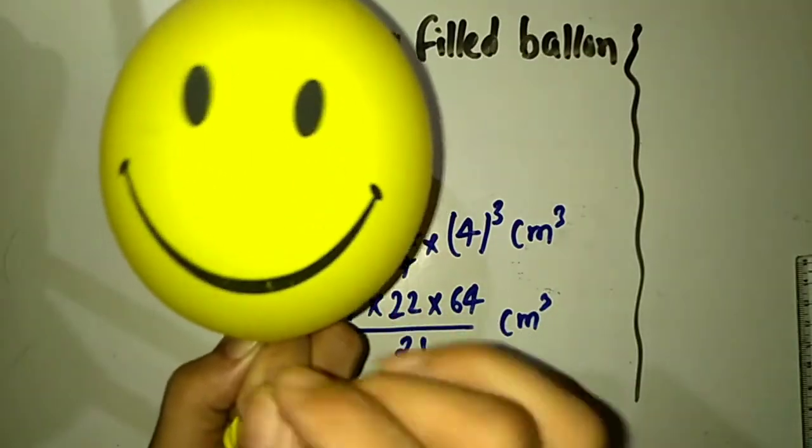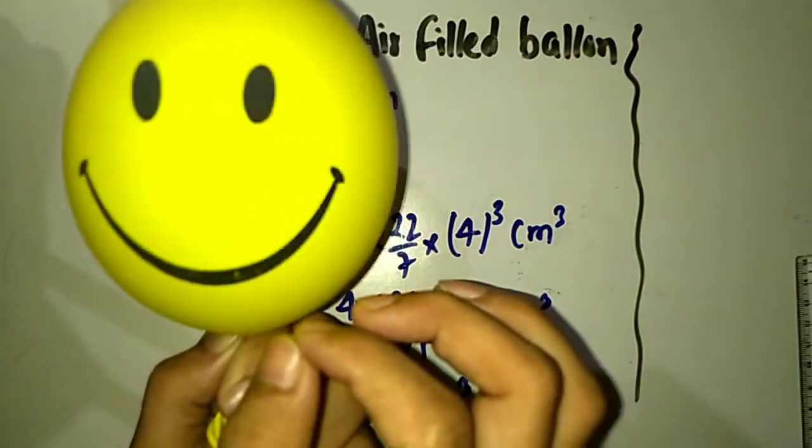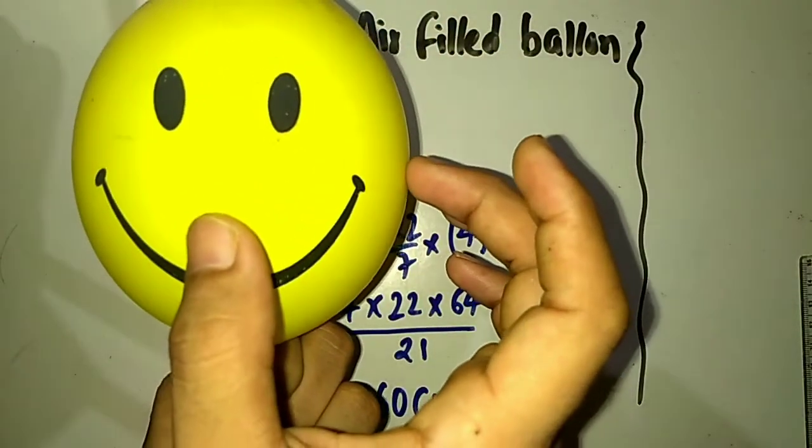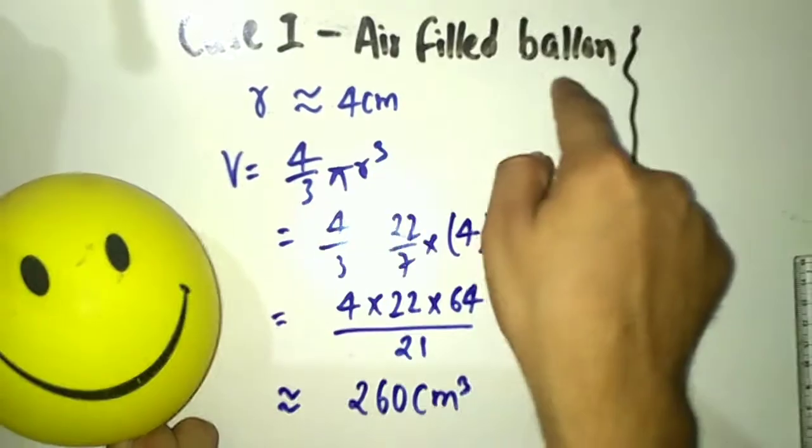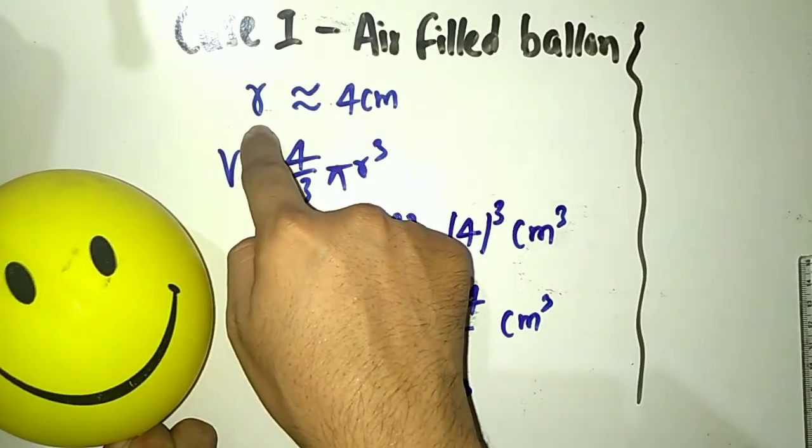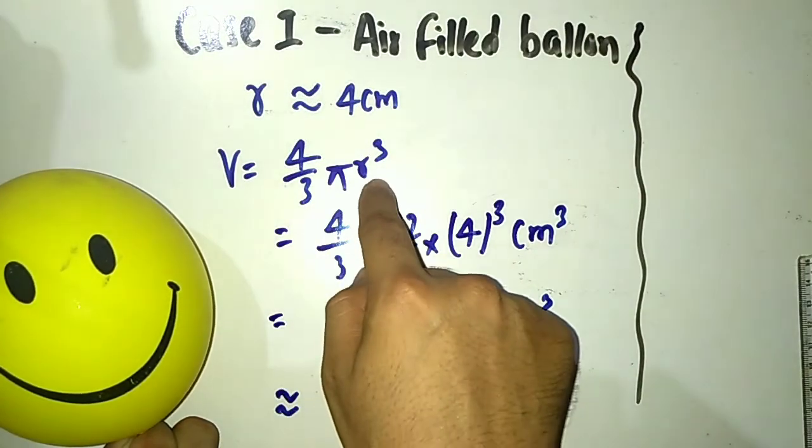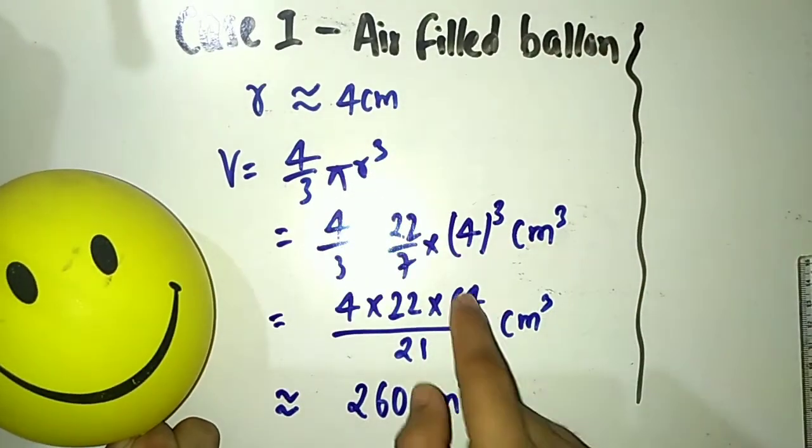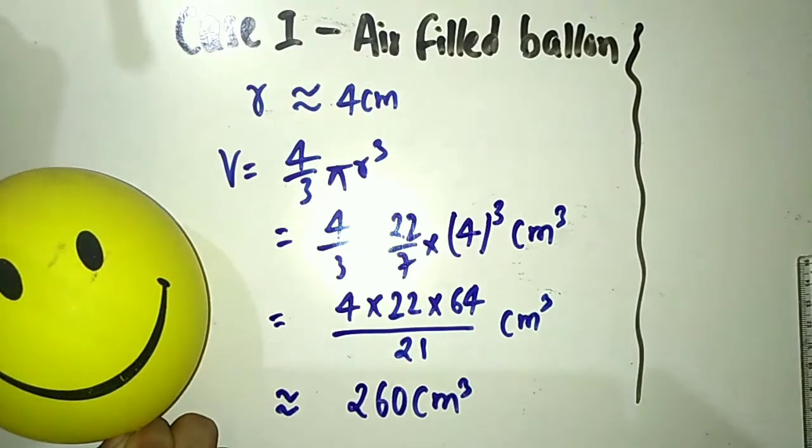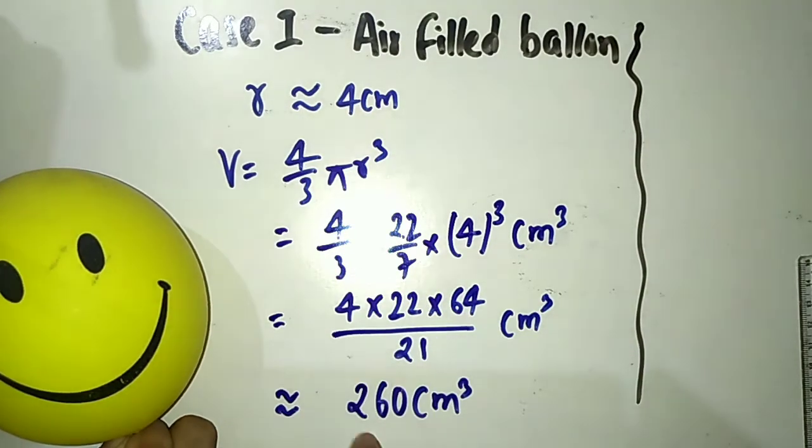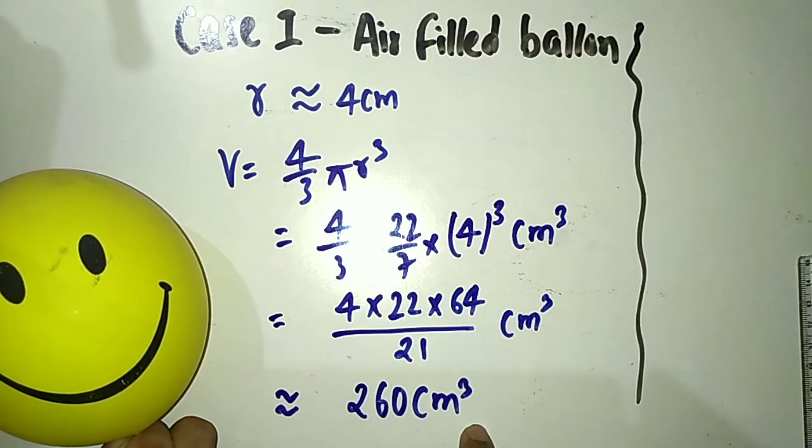Let's calculate the amount of air present in this baby balloon. Assume this is a sphere with radius of 4 centimeters. Case 1: Air filled balloon. The volume of a sphere with radius r is 4/3 π r³. When I put the value of radius and pi, I get the volume is around 260 cm³.